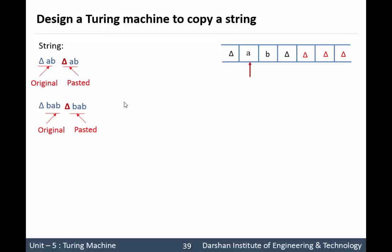We will read 'a' on the tape and replace small 'a' by capital 'A'. Then we need to go to the end of the string. The moment we find the delta that means we have reached the end of the string. Now the next symbol after the delta is again the blank symbol, so we can paste our small 'a' there. Move to the right direction, replacing all a's and b's by themselves, and whenever we encounter the delta that means it's the end of the string. Move one step to the right and whenever we find delta we paste our small 'a'.